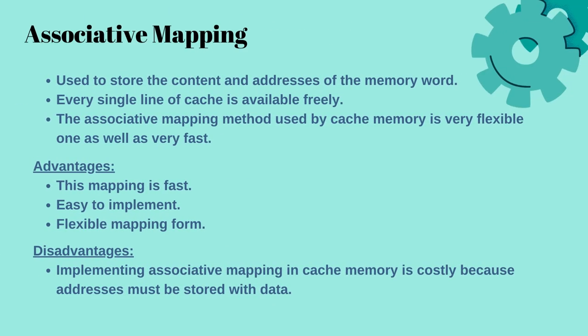Associative mapping stores both the address and the data of a memory word. Any block can go into any line of the cache. This mapping is fast, easy to implement, and a flexible mapping form. The disadvantage of this type of mapping is that implementing associative mapping in cache memory is costly because addresses must be stored with data.